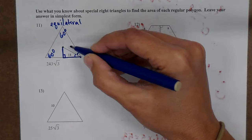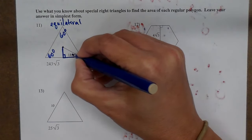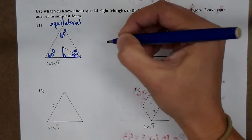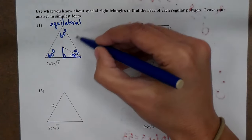If that one's 60 and it's cut in half, what does that give you? 30. There we go. 30, 60, 90 triangle.